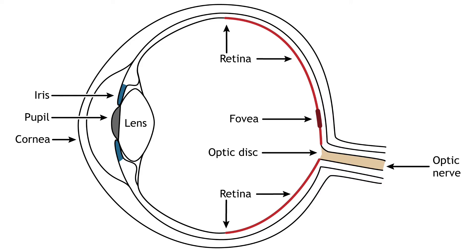The optic nerve projects to the brain from the back of the eye, carrying information from the retinal cells. Where the optic nerve leaves, there are no photoreceptors, since the axons from the neurons are coming together. This region is called the optic disc and is the location of the blind spot in our visual field.